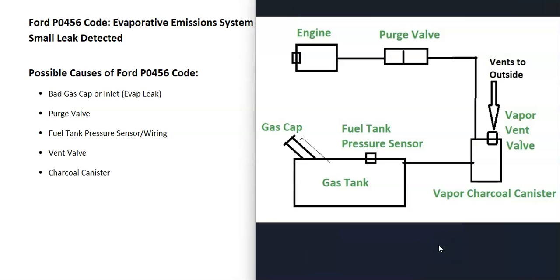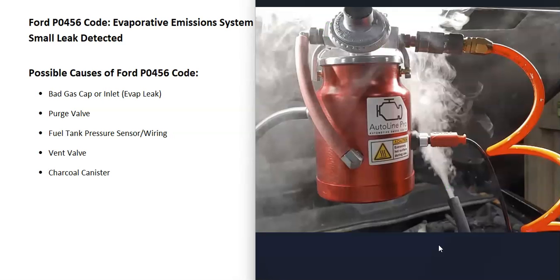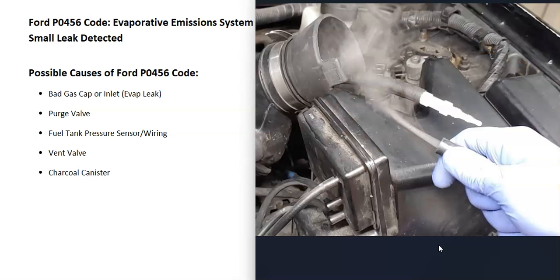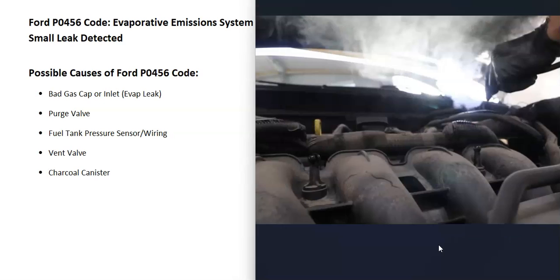If the gas cap or inlet looks good, there are different ways to go about testing this. What a mechanic would do is use a smoke machine and feed smoke into the EVAP system — wherever smoke comes out, they know where the leak is. There are low-cost smoke machines on Amazon or eBay, and you can also make one for around $5-$10. There are good YouTube videos on how to make them. Since there are a lot of hoses and components in the EVAP system, it can be difficult to spot a leak, so this is a common method.